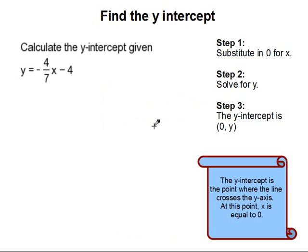Find the y-intercept. Calculate the y-intercept given the following equation. The y-intercept is the point where the line crosses the y-axis, and at this point, x is equal to 0.